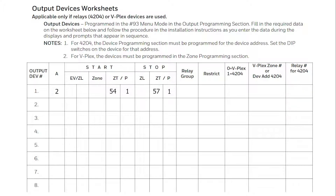Choose your relay type, either 0 for VPLEX such as the 4101SN, or 1 for ECP such as the 4204. Press star. If your relay is the 4101SN, enter the zone number that this module was programmed to. If your relay is the 4204, enter the device number you addressed it to, then press star. Also, if your relay is the 4204, after entering the address, you will be asked to enter the module relay number. This is the position of the relay, 1 through 4, on the 4204. Verify your programming on the summary screen, then press star.